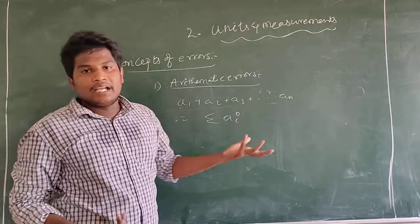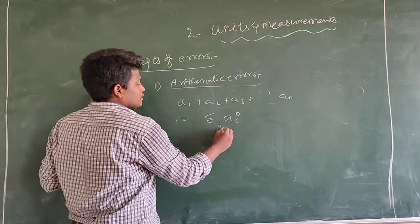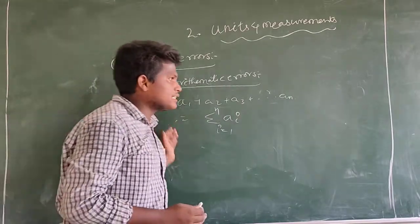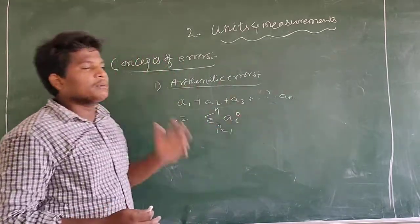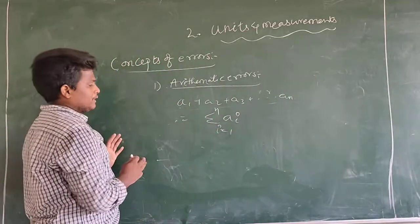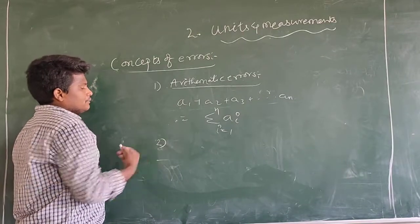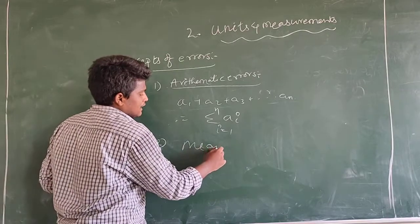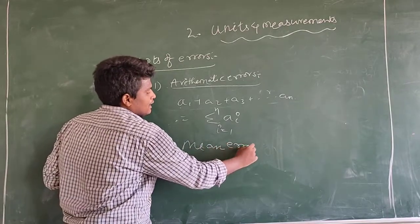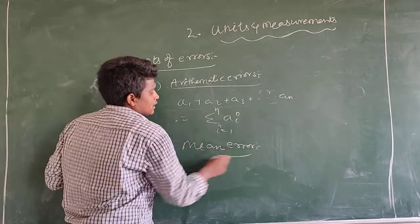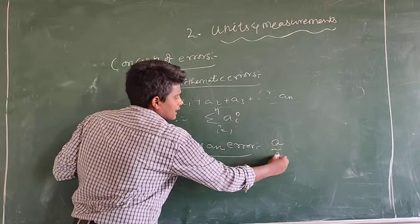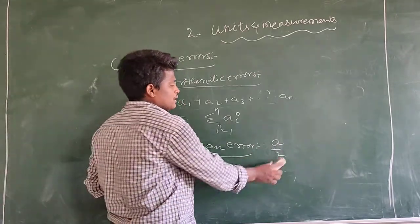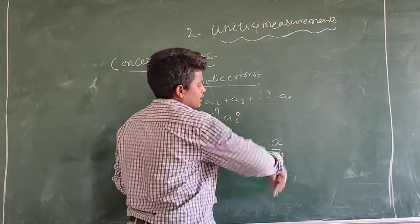That is sigma A_i, for example i equals 1 to n. Then we will account for the number of errors. Second one: mean error. We will take the number of errors and find the mean. For example, 2a, na — the mean of n values.